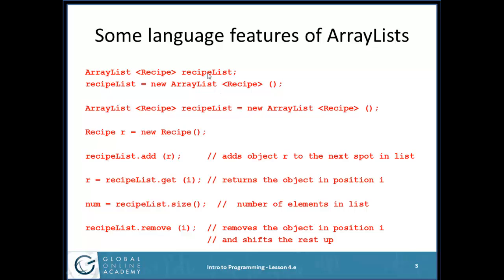If I want to create a recipe list that's going to have more than one element — objects of the class Recipe — I would say ArrayList and then, using angle brackets, the name of the class that all the objects in the array list are going to be part of. So I'd say ArrayList<Recipe>, ArrayList<String>, or ArrayList<CheckingAccount>. So ArrayList<Recipe> recipeList tells Java: give me a variable called recipeList that's going to be an array list with zero or more elements, each of which is type Recipe.